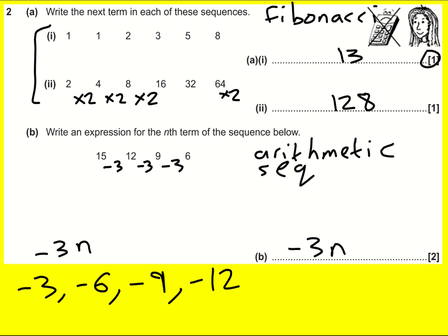A nice way of doing it is to think what happens when n is zero. Here n is one, here n is two. What would happen if n was zero? Well, I'd add three on to the answer there, and get 18. I know when n is zero, I need to have 18, so I'm going to plus 18.